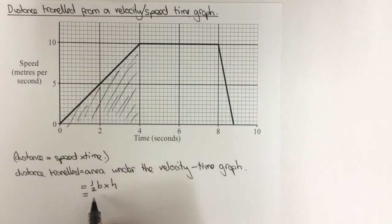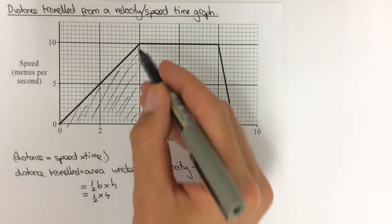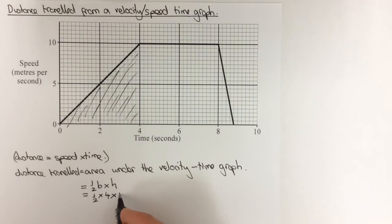This would give us a half times four as the base is four, times the height of ten, which would give us a half times four times ten which equals twenty metres travelled.